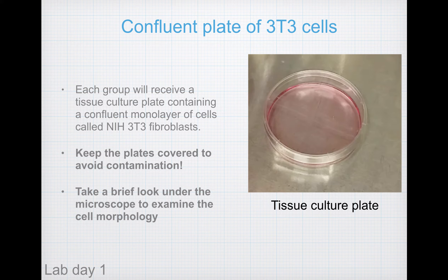To start the lab, each group will receive a confluent plate of NIH 3T3 cells — a cell line established in 1962 from a mouse embryo by two scientists at NYU. Fibroblasts are cells that generate extracellular matrix molecules in connective tissue, like collagen and glycosaminoglycans. We chose this cell line because it's relatively hardy, they grow quickly, and are a standard cell line for biocompatibility studies. Once given your plate, keep it completely covered any time it's out of the tissue culture hood to avoid contamination. Take a brief look under the inverted microscope to examine the cell morphology.